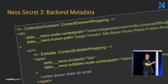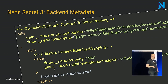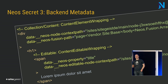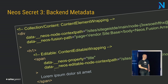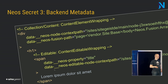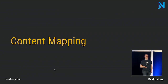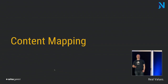Content element wrapping is what makes Neos able to select a node, show inspector properties, and select it in the structure view. The content editable wrapping renders a property key and a reference to which node it belongs. Whenever you run into trouble with inline editing and want to debug this, look into the HTML rendered in the content iframe in the backend, and check whether this metadata is there and contains values that make sense.